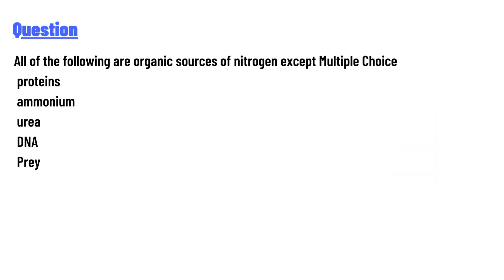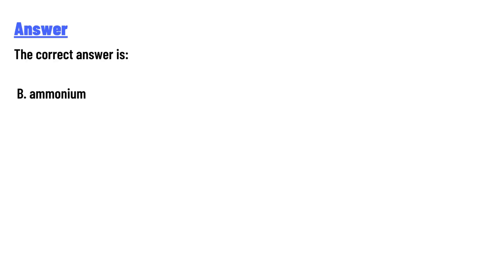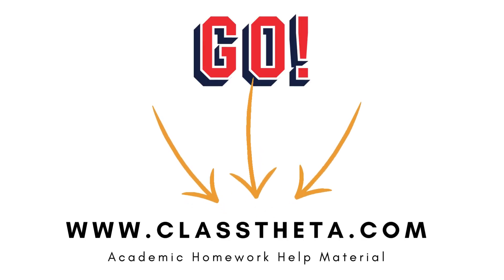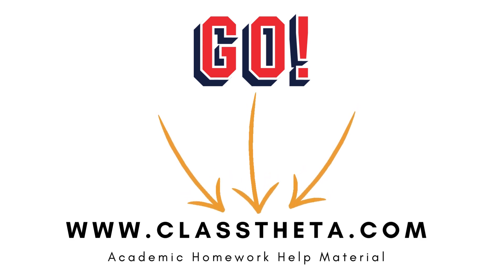The options are: proteins, ammonium, urea, and DNA. The correct answer is B — ammonium. Thank you for watching the video. If you have any question related to this video, please post a comment below.